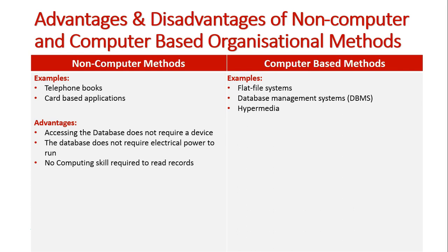The second advantage is the database doesn't require electrical power at all. If the power goes out, I can still use that system — though the lights might be out too. Third, no computing skill is required to read records. It's quite easy to open a telephone book and look through its records — they're sorted alphabetically. As long as I know how to read, I can use that system. There's a basic level of ease with these paper-based systems.